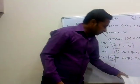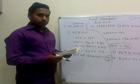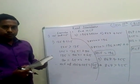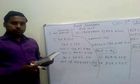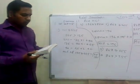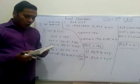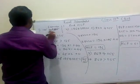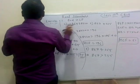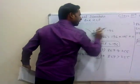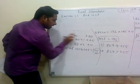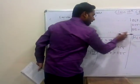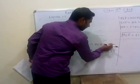Now let us proceed with question number 2: Show that any positive odd integer is of the form 6Q + 1, 6Q + 3, or 6Q + 5, where Q is some integer. This question is quite important and has been asked in many exams. Students often get confused in this question till the end, so pay full attention — this is a totally conceptual question.